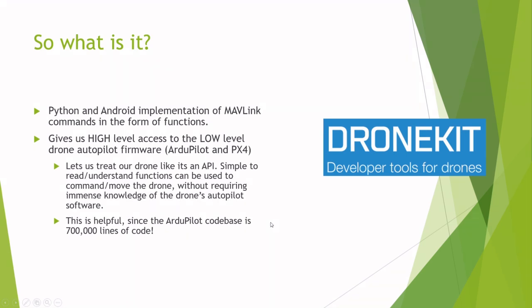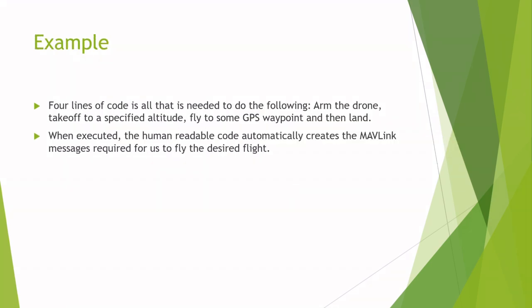In one line of code, for example, we could tell the drone to move to a particular waypoint. In four lines of code in DroneKit, we could tell the drone to take off into the air, fly to a specified waypoint, and then land — all in four lines of code.